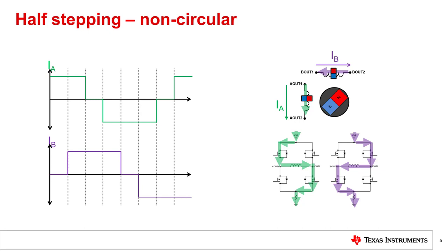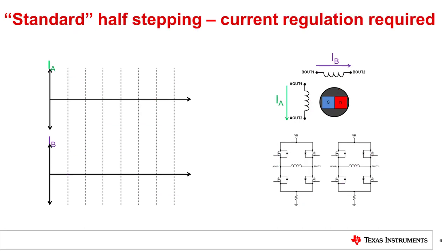Full-stepping and non-circular half-stepping can be implemented without current regulation as long as the motor's supply voltage is equal or less than the rated voltage of the motor. If the motor supply voltage is higher than the rated motor voltage, then the current must be regulated to less than or equal the rated motor current. While non-circular half-stepping is easy to implement, it has high torque ripple, which causes vibration and jerky motion.